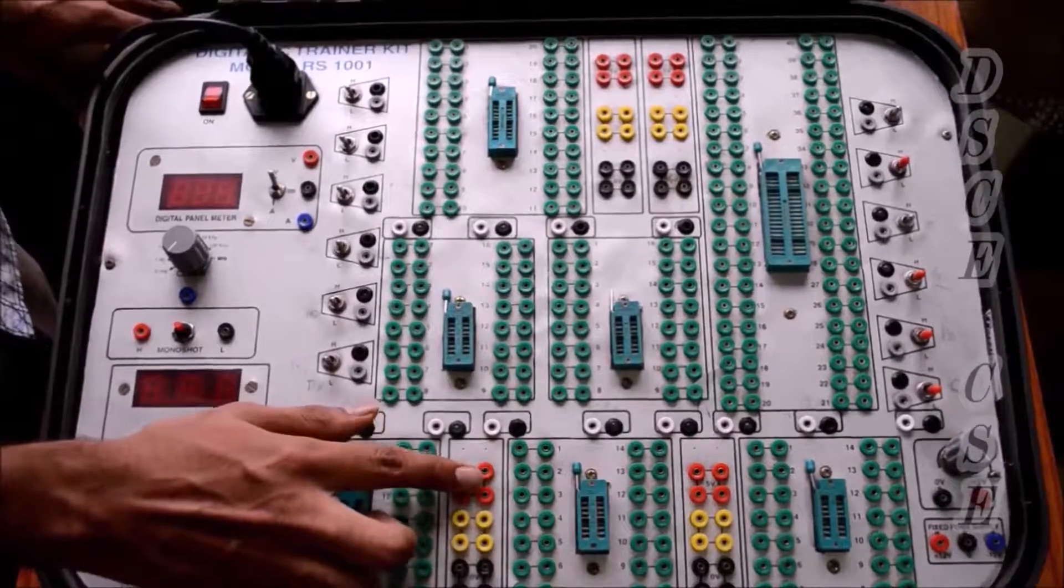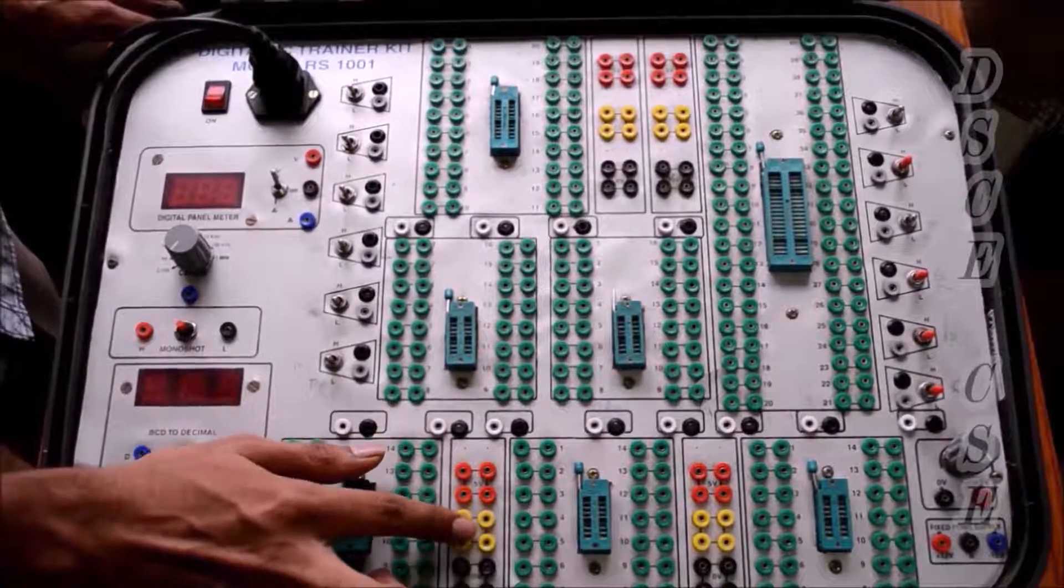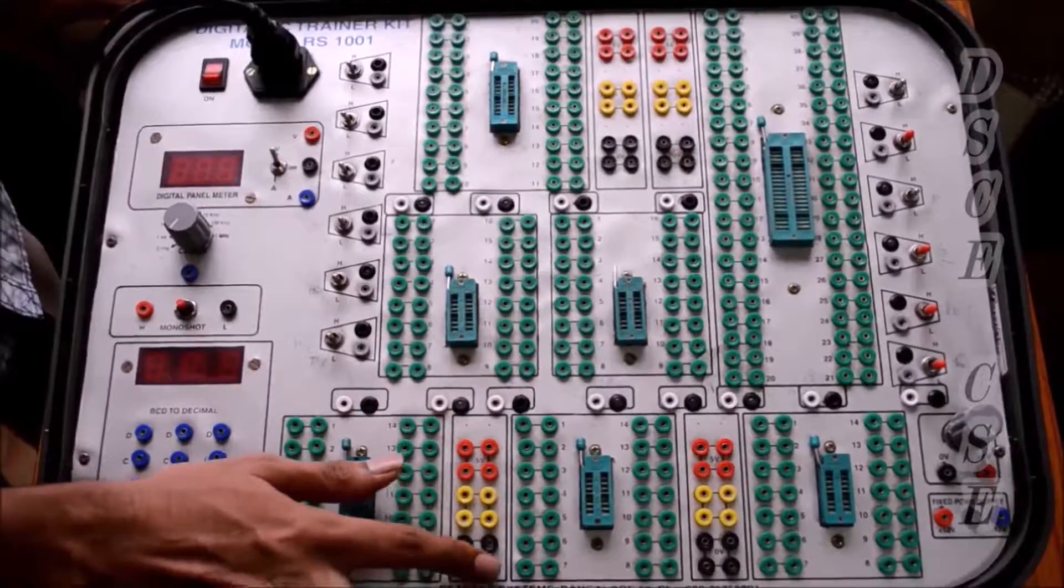This is 5 volt DC supply, these are internally shorted. This is neutral, these are internally shorted. This is ground and these are internally shorted.